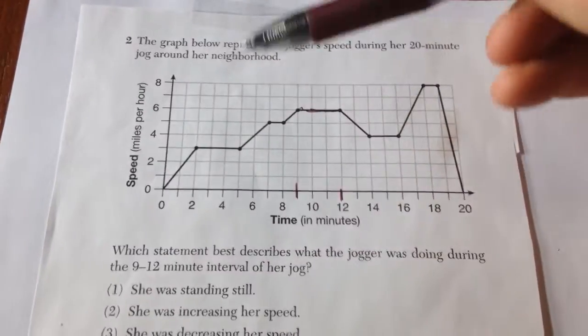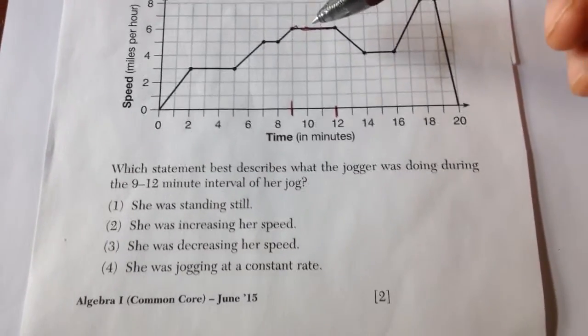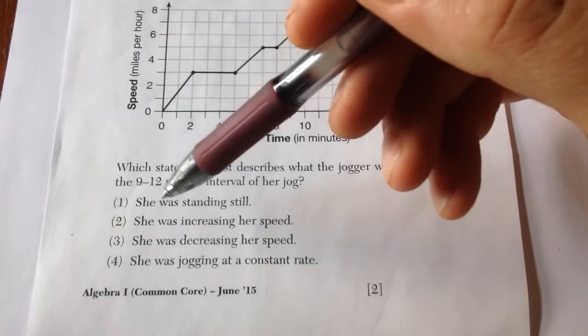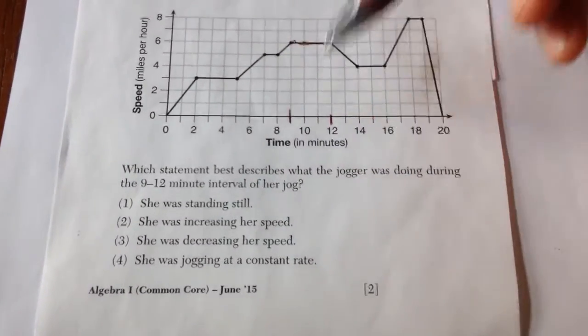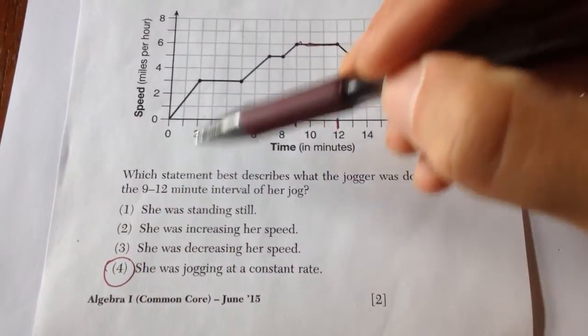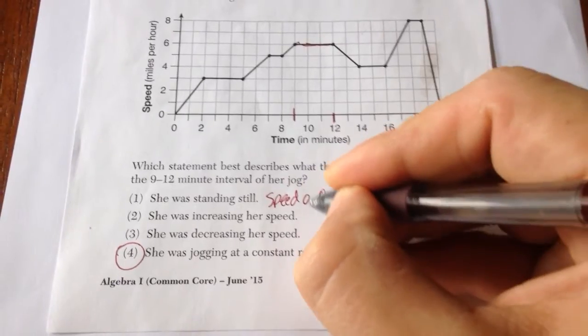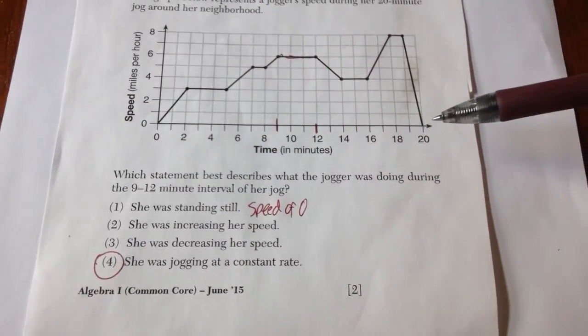Well since it's not increasing or decreasing, we're going to say that it is steady. What we're going to say is that it's a constant rate because it's steady. It's choice four. Standing still would mean a speed of zero, and that would have to be on the x-axis like these two points.